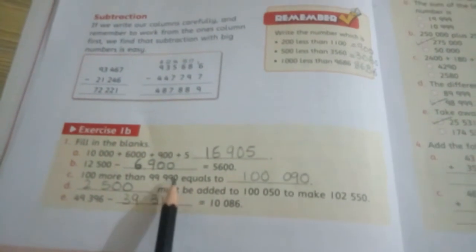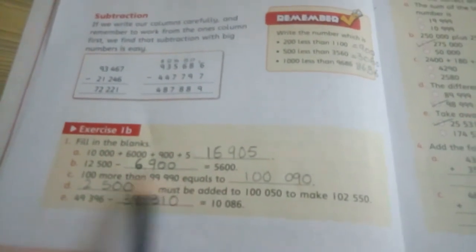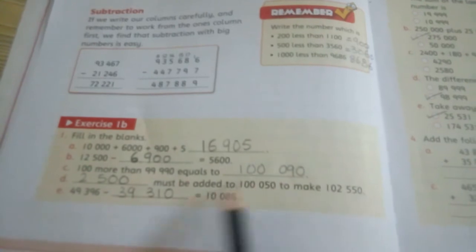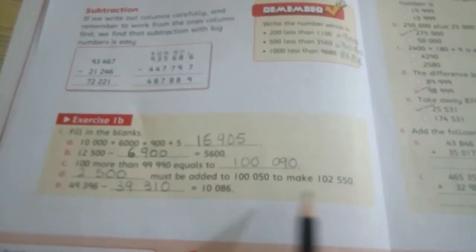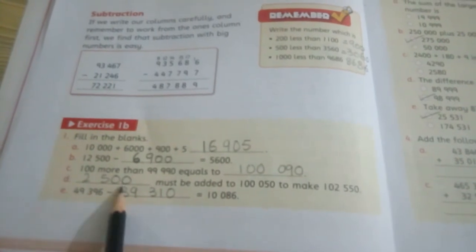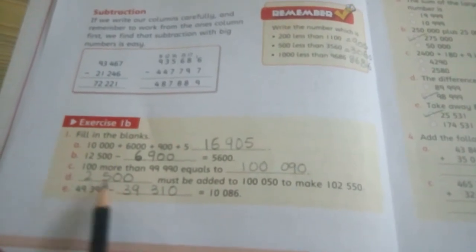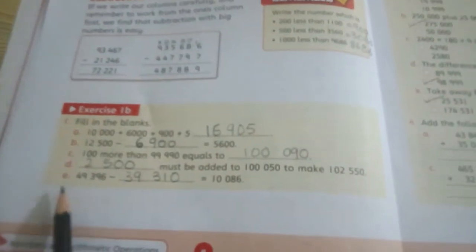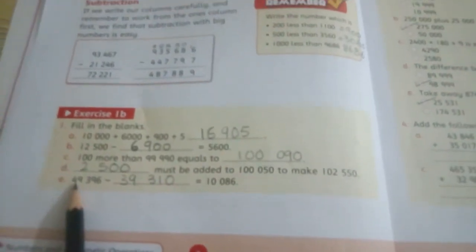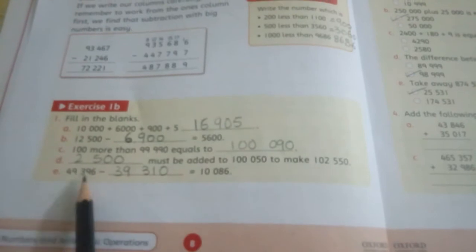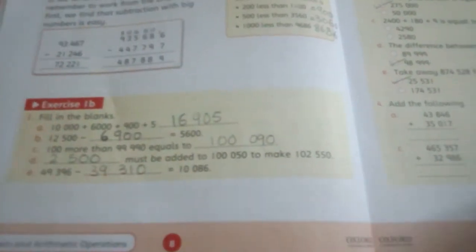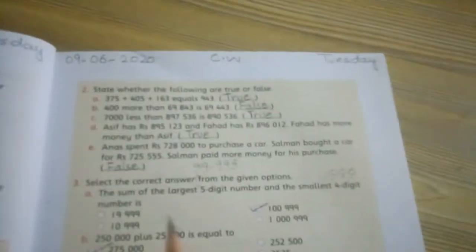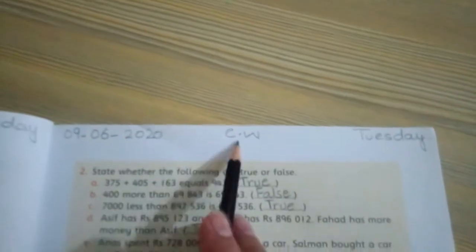Part C: One hundred more than ninety nine thousand nine hundred and ninety equals what? You will add one hundred to this number and write the answer. Part D: This number must be added to make this. You will subtract and find what needs to be added. Part E: Forty nine thousand three hundred ninety six minus dash equals the answer. Come to the next page.